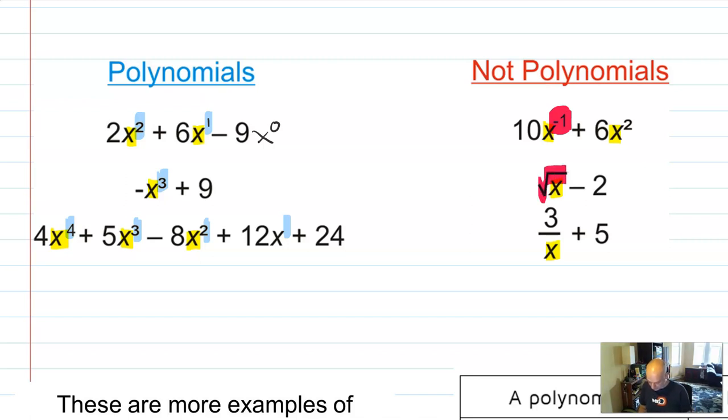but in non-polynomials what you'll notice is that you might have things like negative exponents on the x, or square roots, which are like fractional exponents, or this is like a negative exponent again, or an x on the denominator, which are not good.